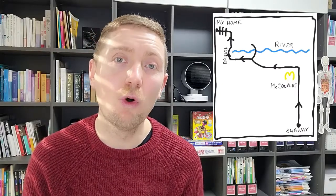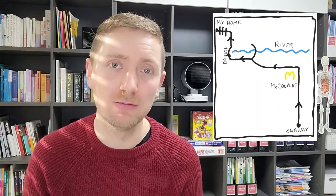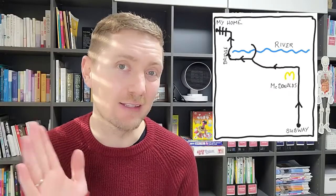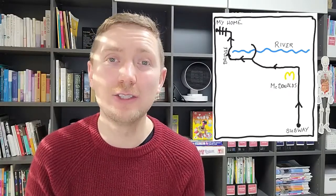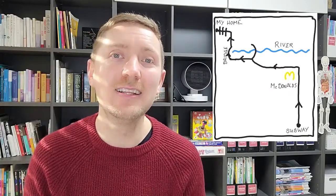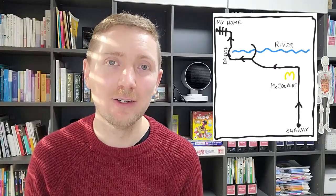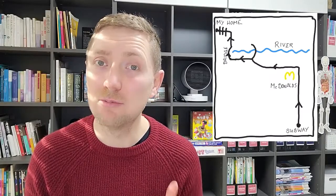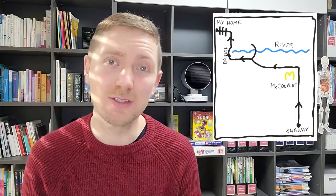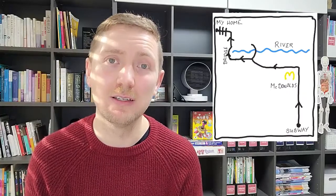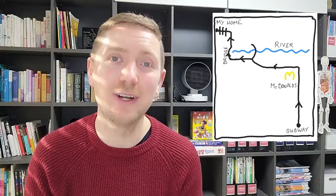Then walk over the bridge on your right. Again, walk along the street until you see a zebra crossing. When you see the zebra crossing, turn left, go across the zebra crossing, and voila — you're at my home.